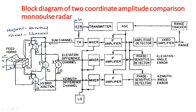The output of the hybrid junctions is connected to one more hybrid junction, which again adds and takes the difference of the two signals. The outputs are an elevation difference channel and an azimuthal difference channel. This entire operation produces two different angular errors: azimuthal angular error and elevational angular error.